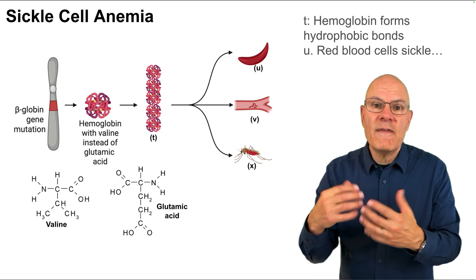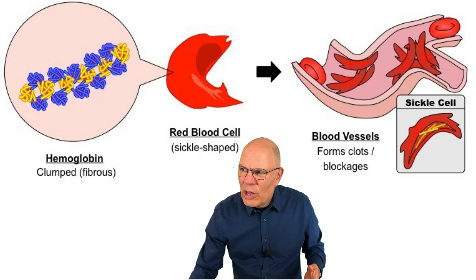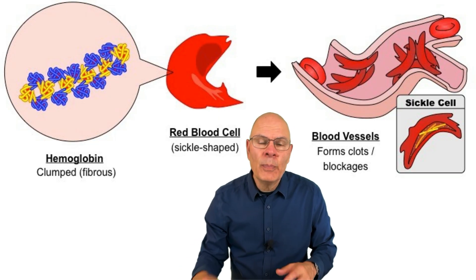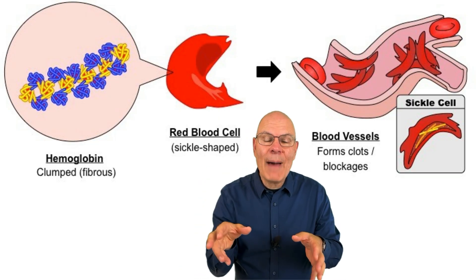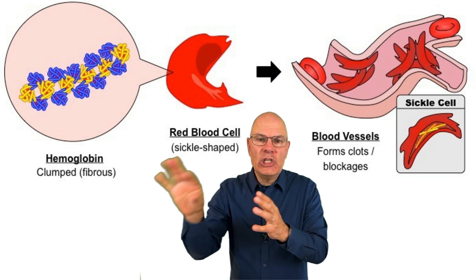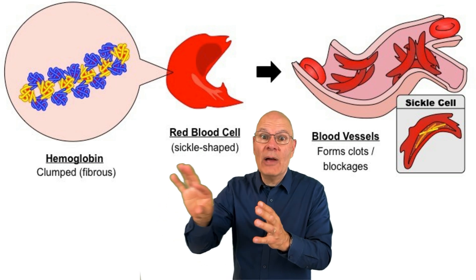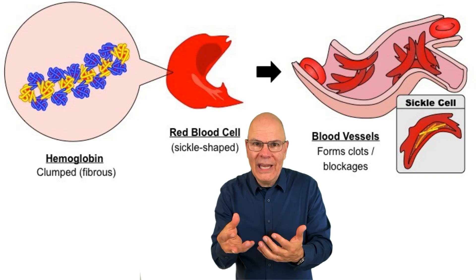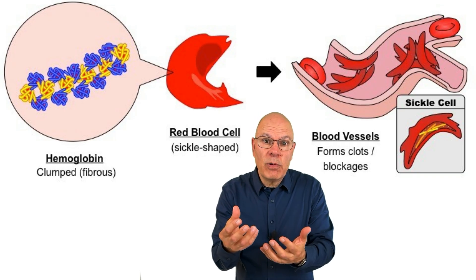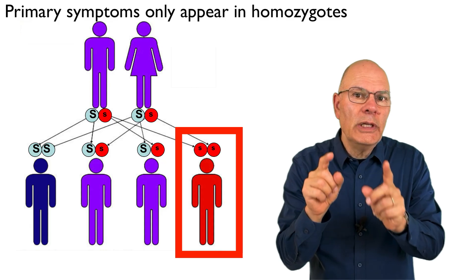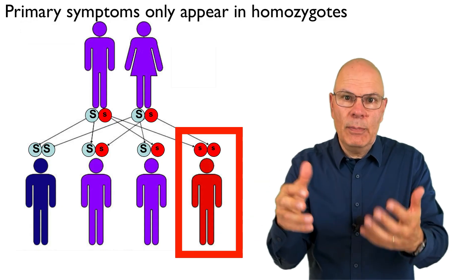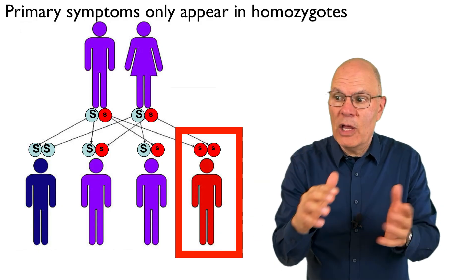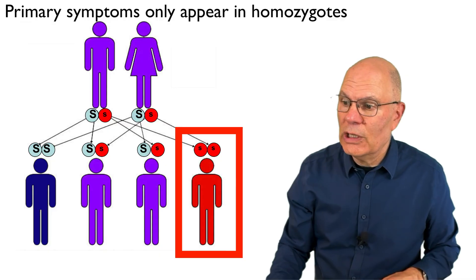Because there are these long fibers, the red blood cells sickle. These red blood cells stick together and get trapped in capillaries, causing tissue damage downstream of the block and leading to incredible pain crises. These are the primary effects, and they only appear in people who inherit two alleles — one from their mother and one from their father.